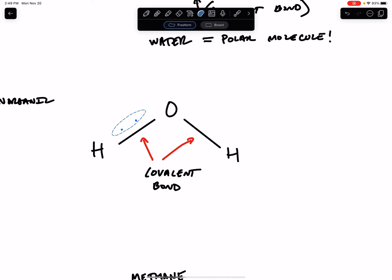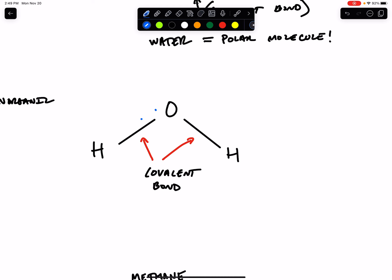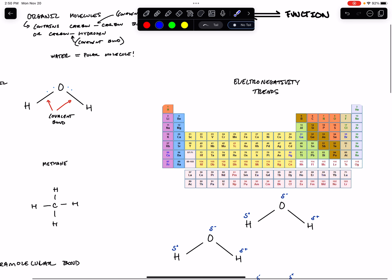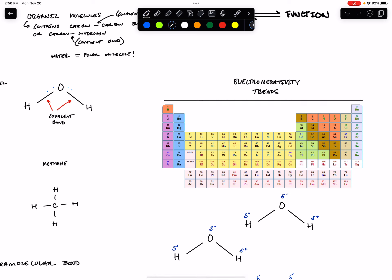Oxygen pulls on them more strongly — it has what's called more electronegativity. Electronegativity has a trend across the periodic table, and it is increasing as you move this way across the table. The most electronegative element on the table is fluorine — though I should note it stops with the noble gases.